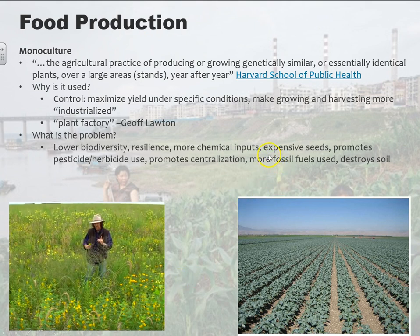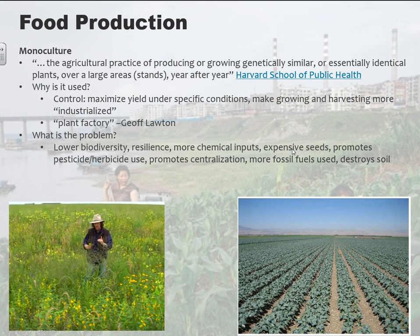A lot of industrial farming now uses specialized hybrid seeds that you can't propagate. A regular plant naturally replenishes itself — it'll drop seeds and regrow. But hybrid or genetically modified seeds aren't viable. You can't take seeds from a GMO tomato or a hybrid tomato, save them, and grow another one. So you have to keep buying seeds — that's kind of the point.